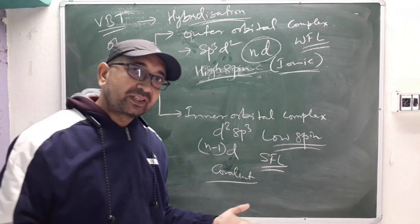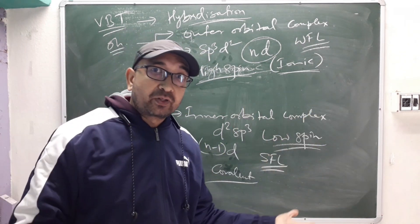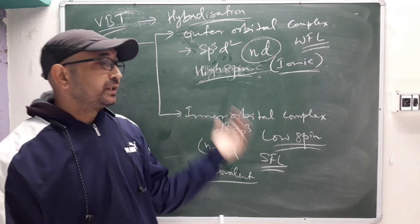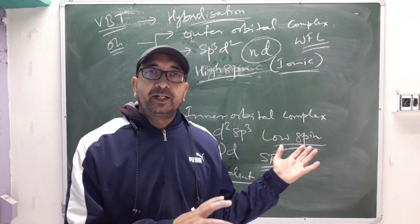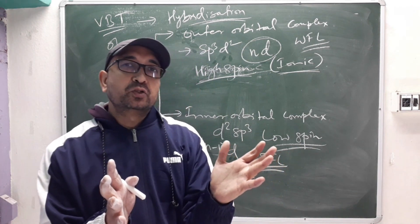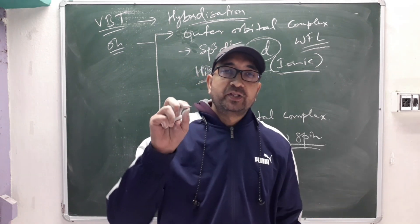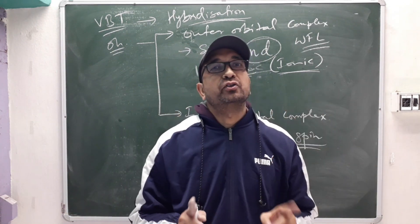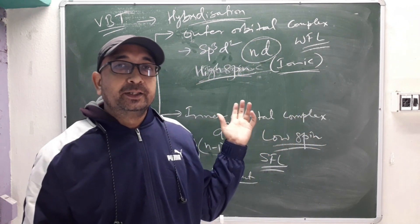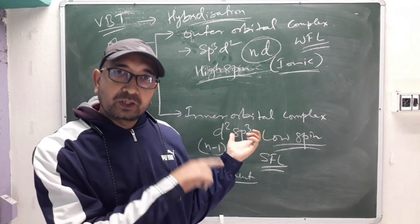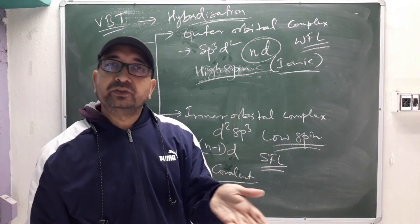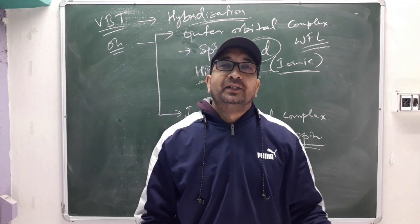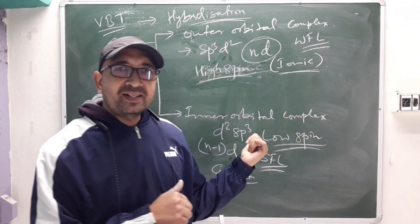I like VBT for its simplicity around hybridization. Next we will go to CFT, where we calculate splitting energy, number of unpaired electrons, and magnetic moment. Remaining topics include inorganic spectroscopy, reaction mechanism, trans effect, and Orgel diagrams. After covering those concepts, we will solve all 26 past year questions. Stay with me and watch these classes — thank you very much.